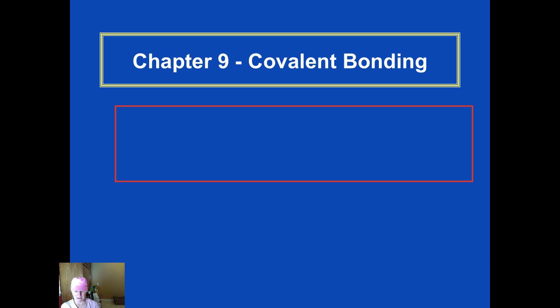Good evening everyone. This is Miss Doherty in her bright pink hat talking to you tonight about chapter 9 covalent bonding. Please have in front of you your yellow PowerPoint notes. We're going to start at the beginning and the concepts we'll cover are what is covalent bonding and why do atoms do that, what's the difference between a sigma and a pi bond, and how atoms can have single, double, and triple bonds.